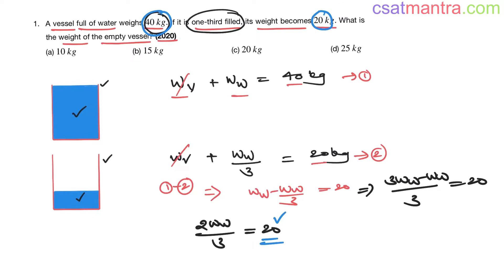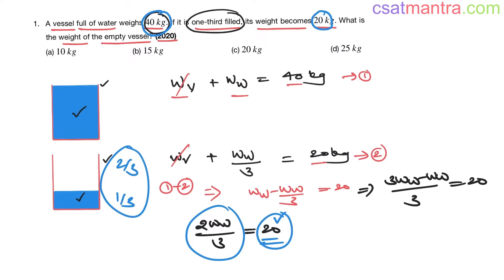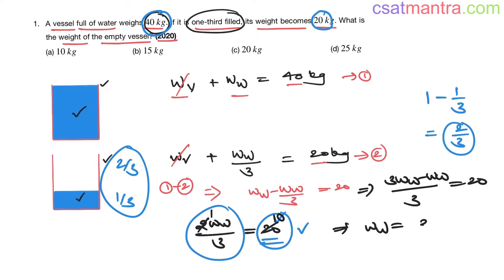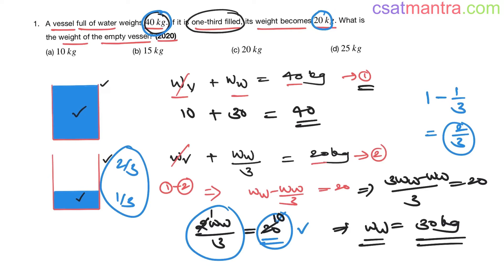The decrease in weight of 20 kg is because of the decrease in water quantity. Two-thirds of the water decreased — initially the water quantity was full (1), now it's one-third, so two-thirds decreased. Two-thirds of the water weight equals 20 kg, so the weight of water = 30 kg. From Equation 1, weight of vessel = 40 − 30 = 10 kg.